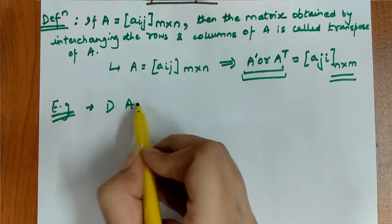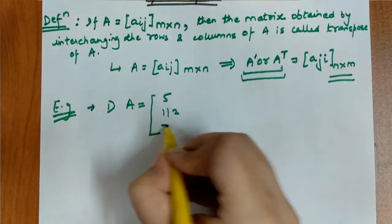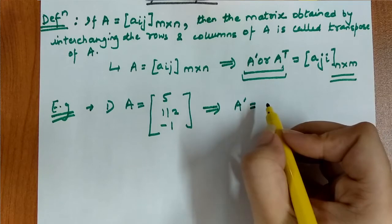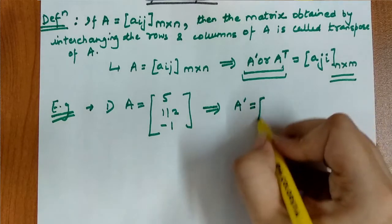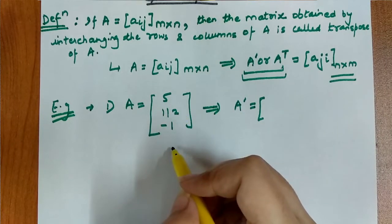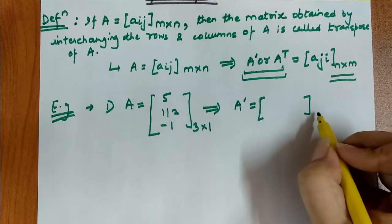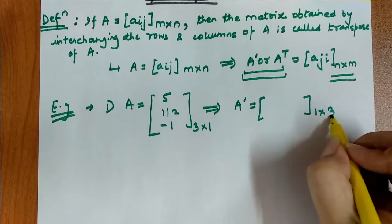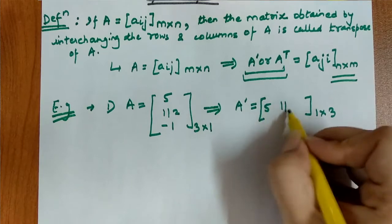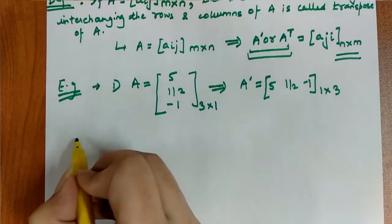For the first example, we have matrix A which is [5, 1/2, -1]. This is a column matrix with 1 column and 3 rows, so its order is 3 cross 1. The transpose A dash or A^T will have order 1 cross 3, meaning 1 row and 3 columns. So we represent the column as a row: [5, 1/2, -1]. This is our matrix A transpose.